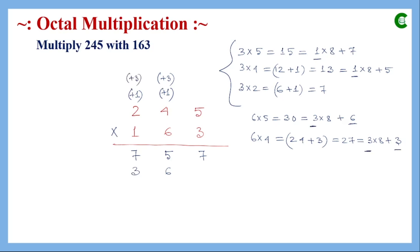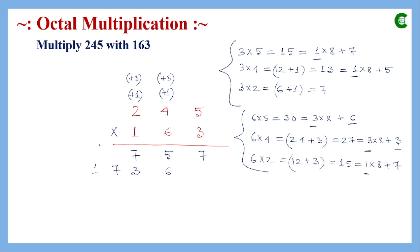Then 6 × 2 = 12, plus carry 3 equals 15, represented as 1 × 8 + 7, so we write 7 and carry 1. Since there are no more digits to multiply, the carry is written directly here.